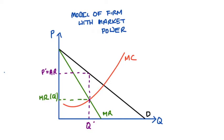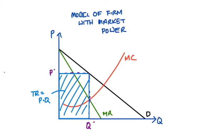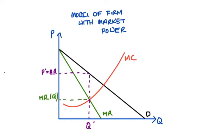So that's my total revenue, marginal revenue, and average revenue for one particular outcome. Now we're going to think about finding our total revenue, marginal revenue, and average revenue functions, which tell us about these things for all possible quantities that the firm could choose to produce.